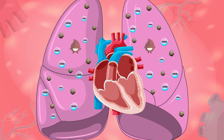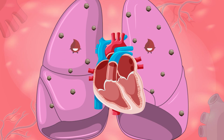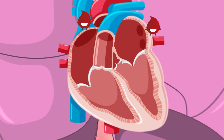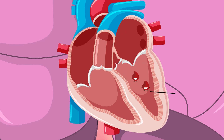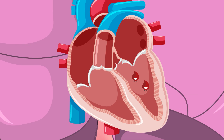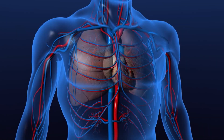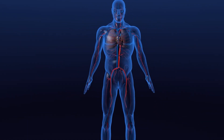Once in the right ventricle, the heart sends the blood directly to the lungs. It is in this moment where the blood is oxygenated and filled with oxygen and nutrients. When it is already oxygenated, it goes back to the heart, reaching the left atrium, from where it passes through the third valve into the left ventricle.